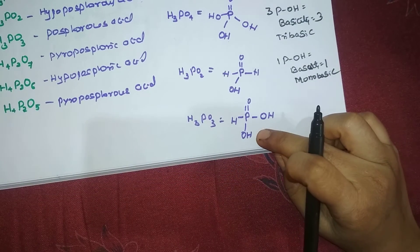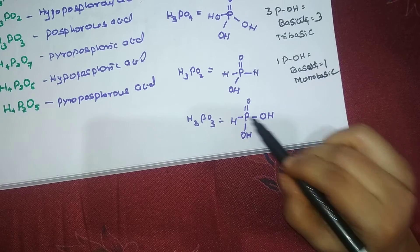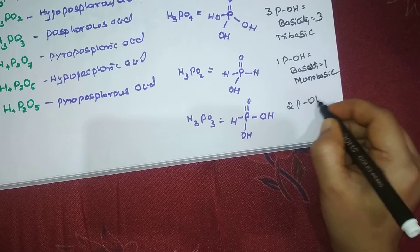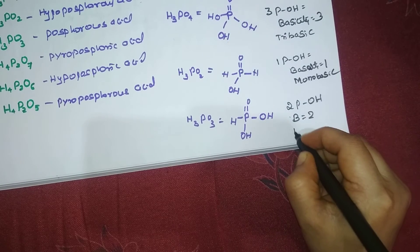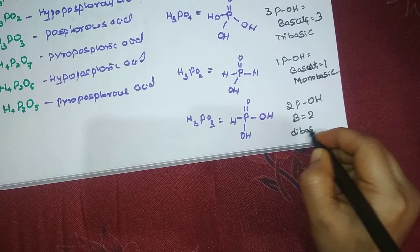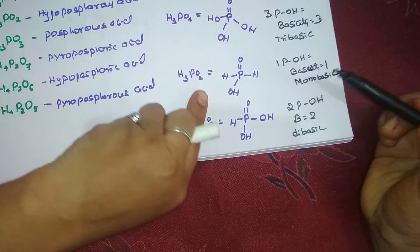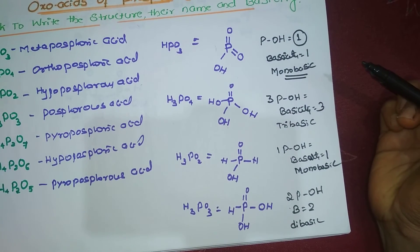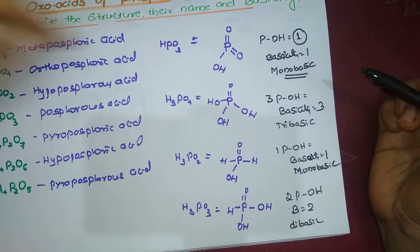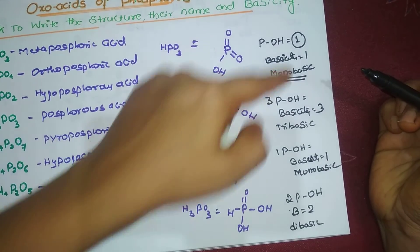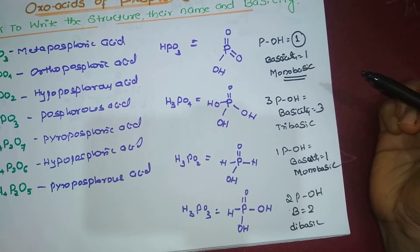Next is H₃PO₃, called phosphorous acid. This has two P-OH bonds, so the basicity is 2 and it is dibasic in nature. In short, if you know how to write the structure - as shown in my previous video - you can determine the basicity very easily: count the P-OH bonds.